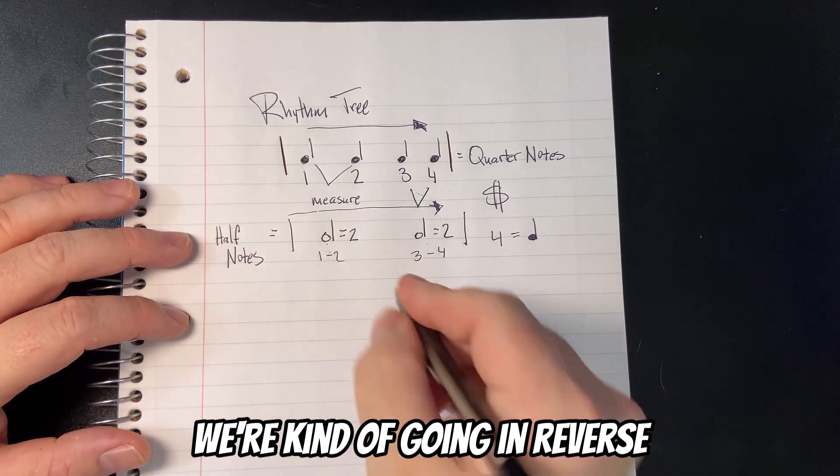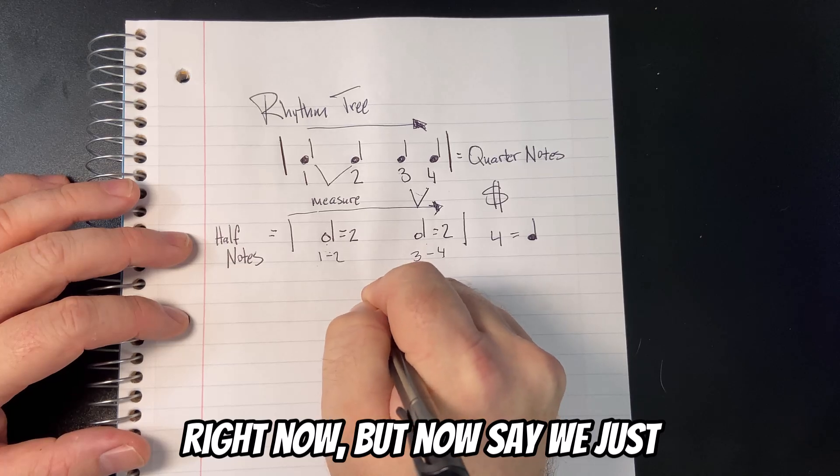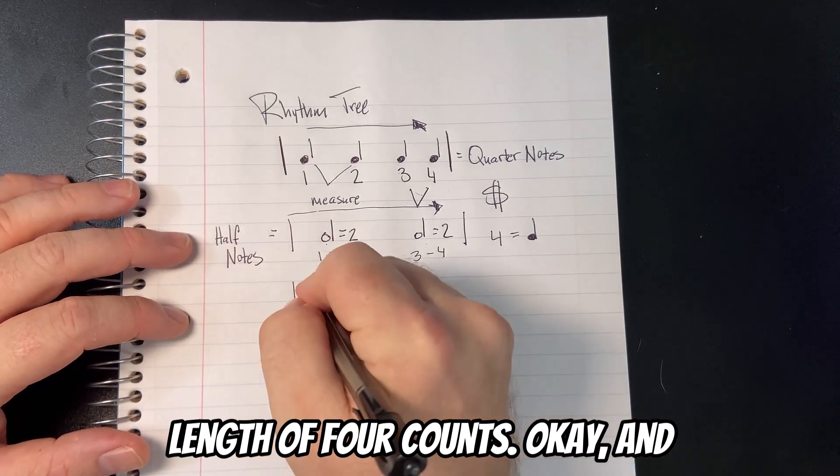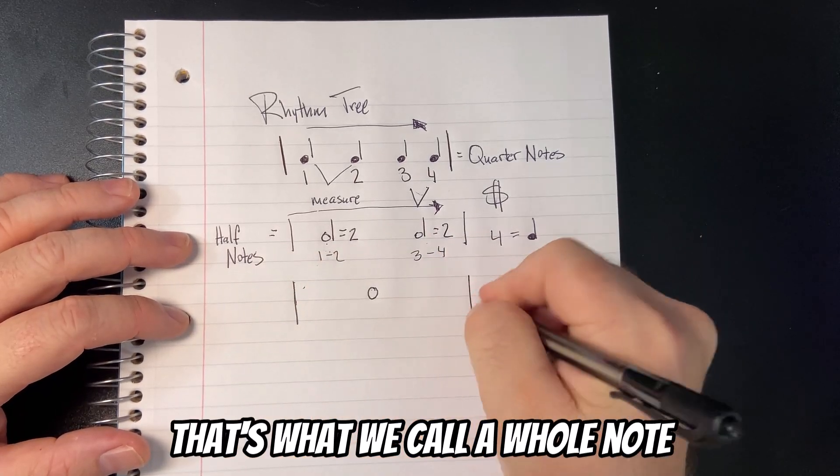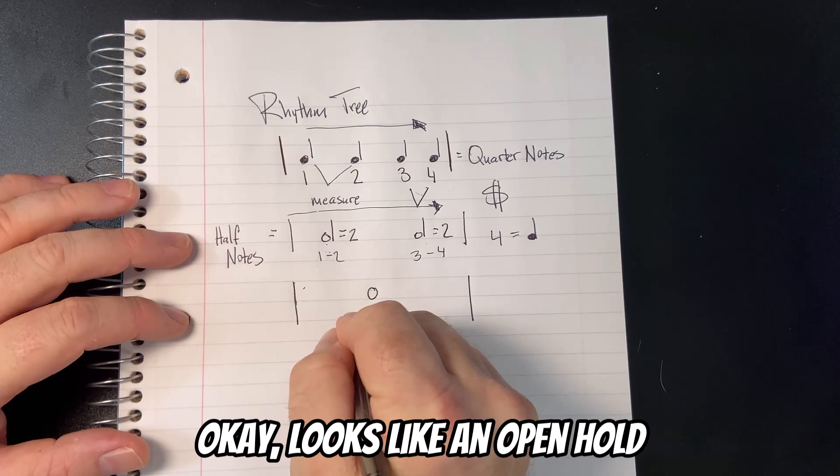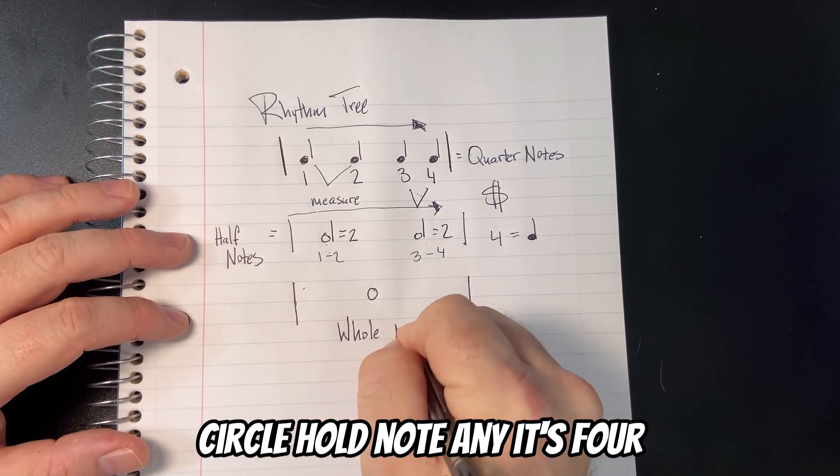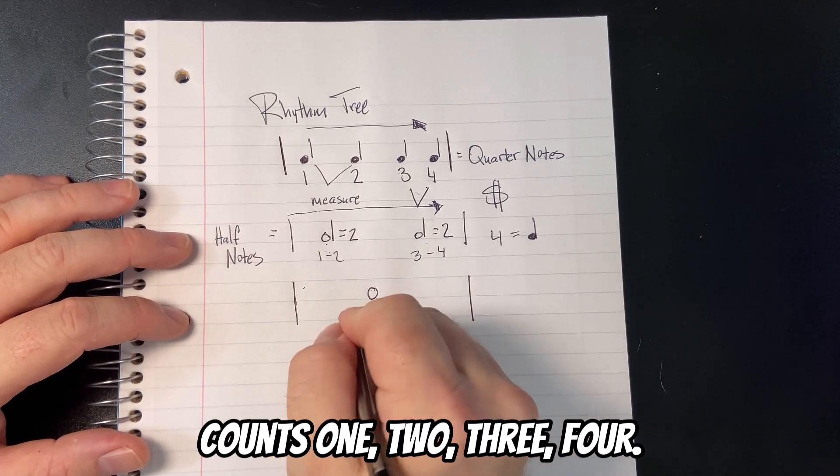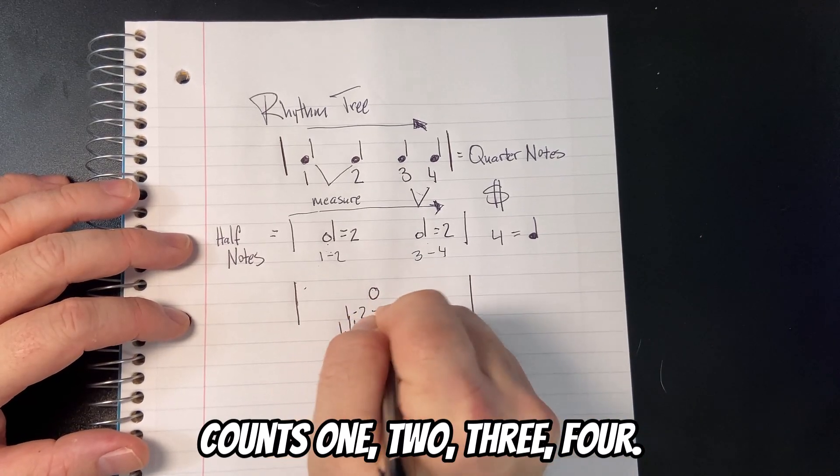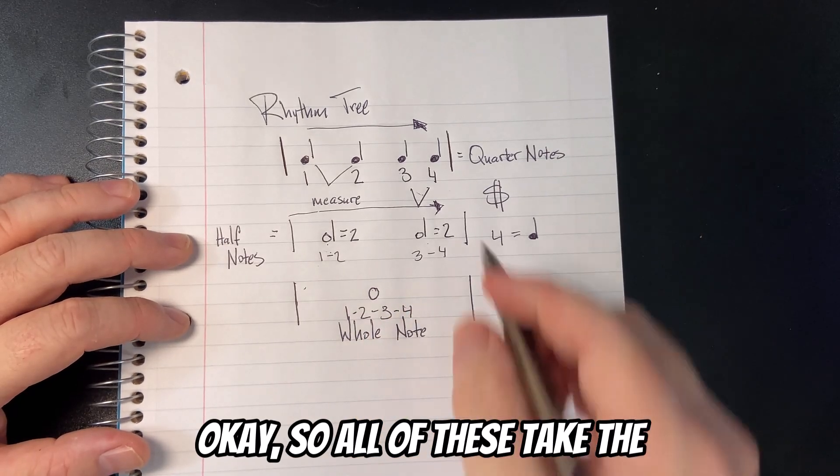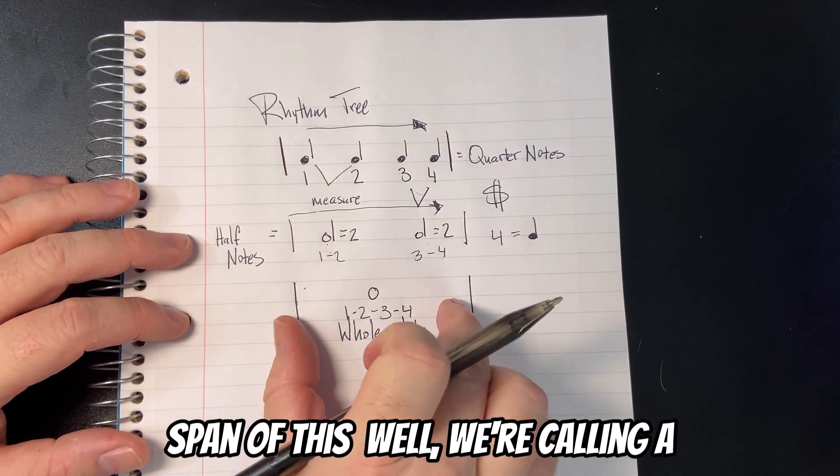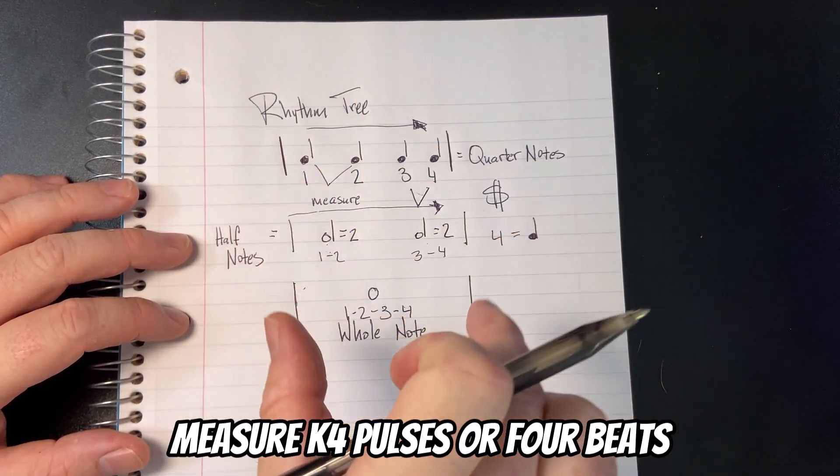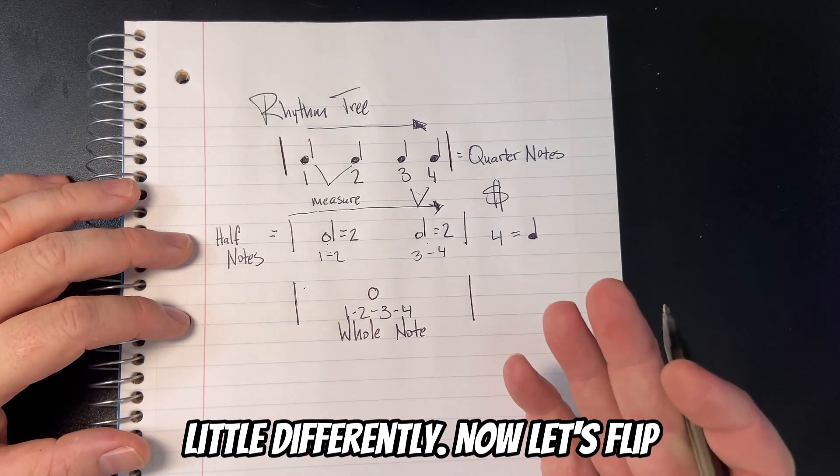And so, we're kind of going in reverse right now. But now say we just want to have one big note, the full length of four counts. And that's what we call a whole note. It looks like an open hold circle. Whole note. And it gets four counts: one, two, three, four. So all of these take this span of this measure - four pulses or four beats worth of time, but they're done a little differently.